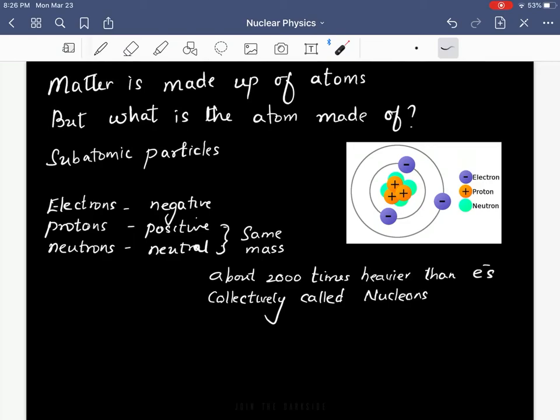Now let's go into the details of the atom. Matter is made of atoms, but what is the atom made of? The atom is made of subatomic particles called electrons, protons, and neutrons.